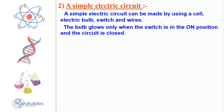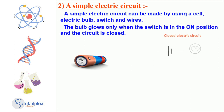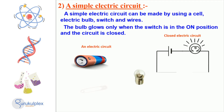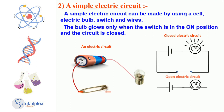Electricity plays an integral role in our lives, and it is imperative to comprehend electric current. An uncomplicated electric circuit can be formed with a cell, an electric bulb, a switch, and wires. When the switch is set to the on position, it completes the electrical circuit, leading to the bulb illuminating. Conversely, when the switch is in the off position, the circuit is broken, thus not allowing the bulb to light.